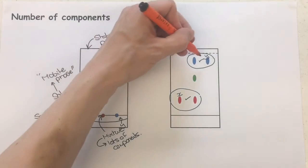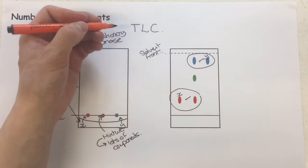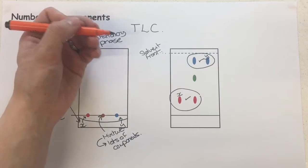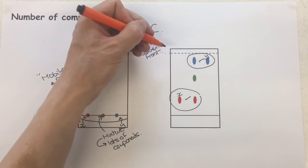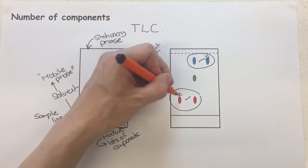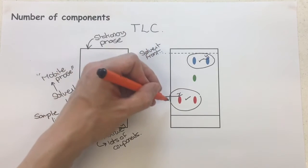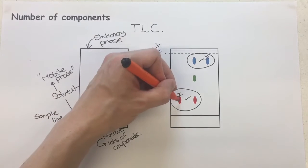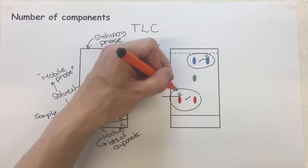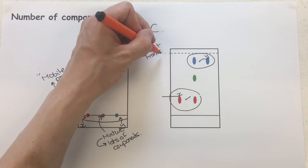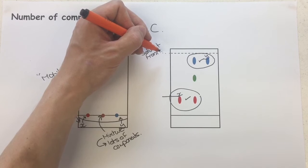You'll notice that X and Y are at two completely different levels. We can actually compare these two together by using our RF values. If I just do X, for example, let's just do a line across for X, just there, then X's component spot would have two factors to consider in order to calculate an RF value.